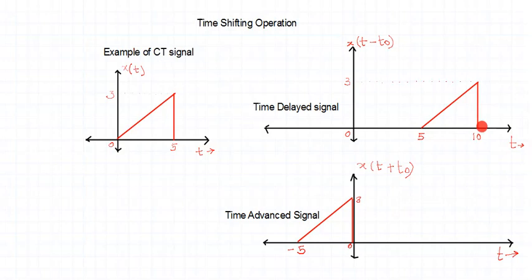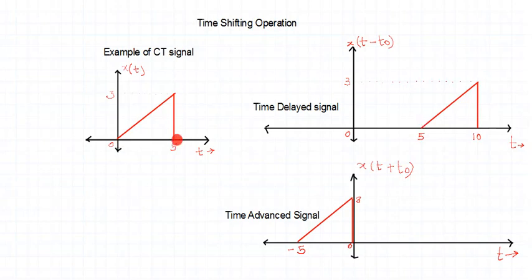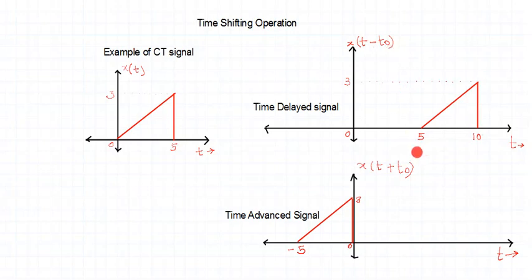When I shift the signal by some minus T₀, compare the original signal with the shifted one. The signal has shifted to the right-hand side. The shape of the signal is still the same. The signal which was in the time period 0 to 5 is now shifted to a period of 5 to 10. The amount of shift is 5 units, so we call the signal X(T - 5).